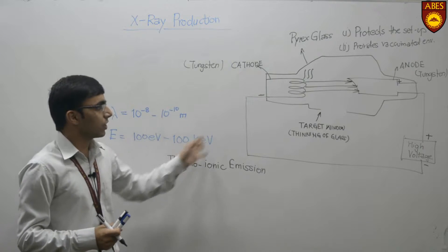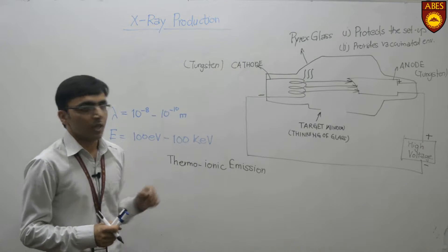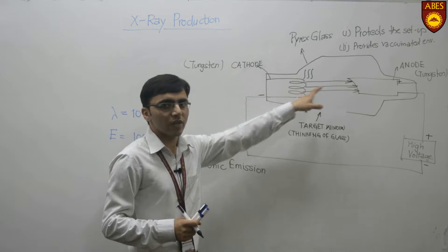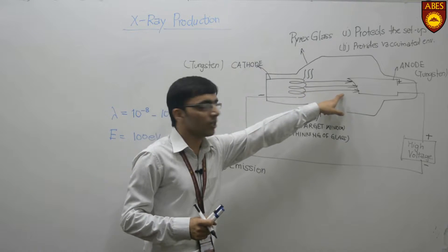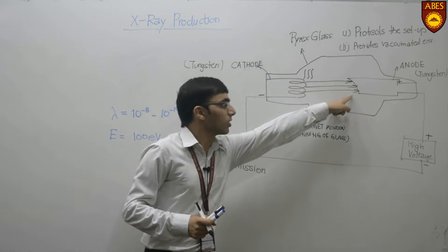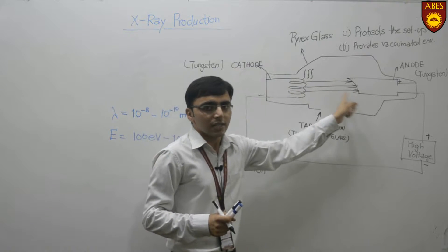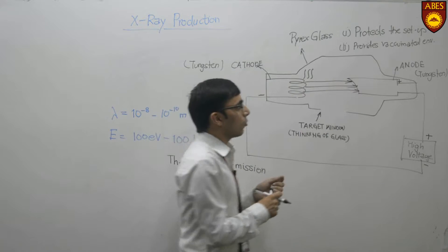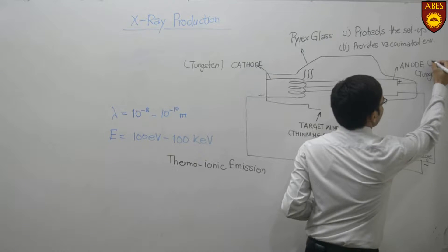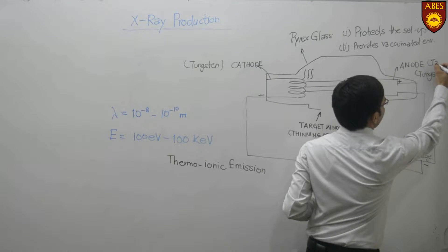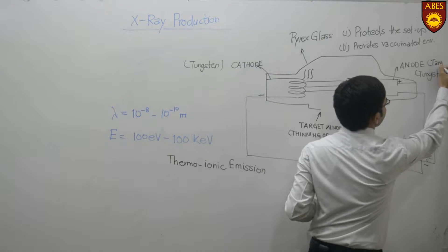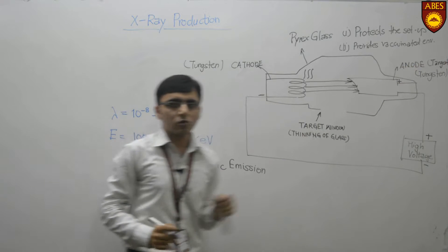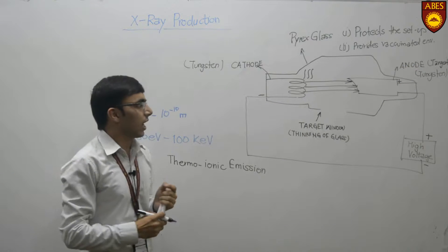Thermionic emission happens because the thermal energy applied to the surface is larger than the work potential of the material itself. The electrons produced from the cathode start moving towards the anode because it is positive and strike the anode. Since they are hitting the anode, the anode is also known as the target.